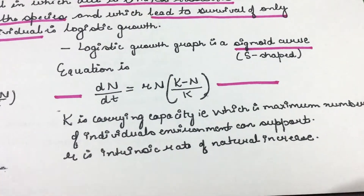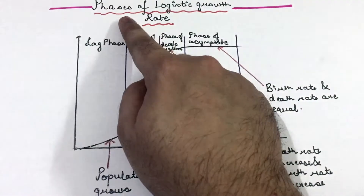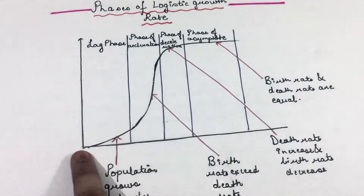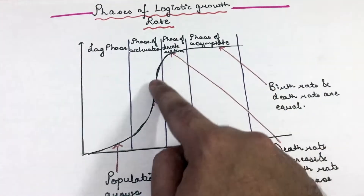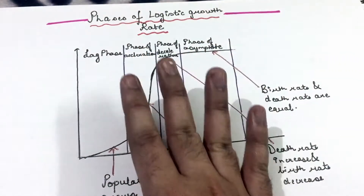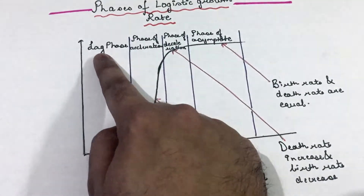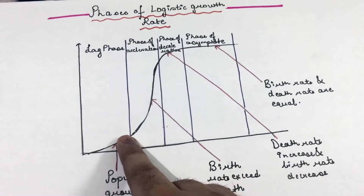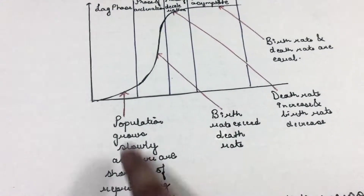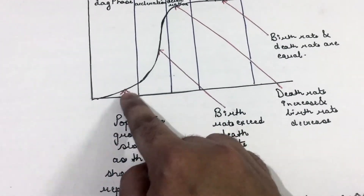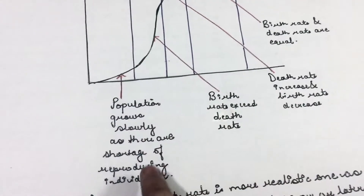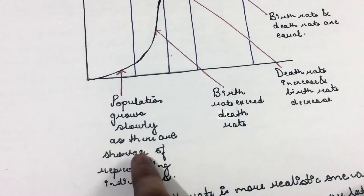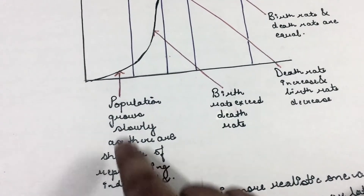Now let us look at the phases of the logistic growth curve. The logistic or sigmoid S-shaped curve has four phases. Phase one is the lag phase. In the lag phase, population grows slowly because there is a shortage of individuals of reproductive age. Due to the shortage of reproducing individuals, the population grows slowly in the lag phase.